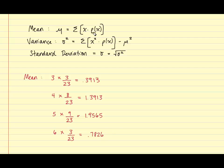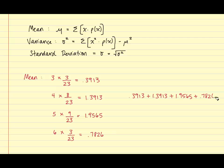Our next step is to sum them. Now that we've multiplied each x times its corresponding probability, we're going to add them together: 0.3913 plus 1.3913 plus 1.9565 plus 0.7826, and that sums to 4.5217. This tells us the average number of classes a student is taking is 4.5 classes.